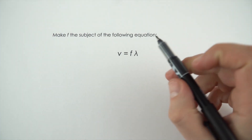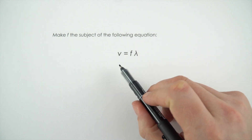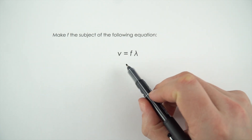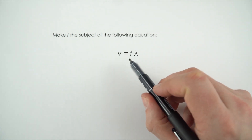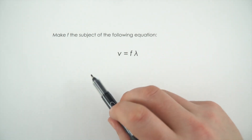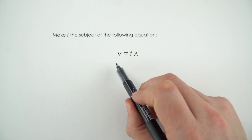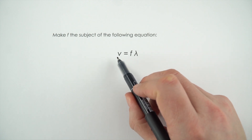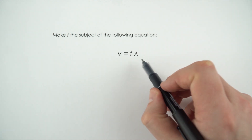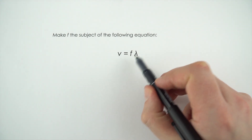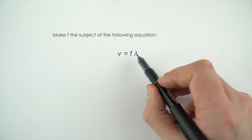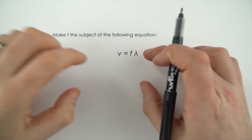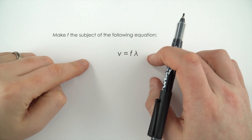In this example we need to make F the subject of the following equation. This is the wave speed equation, where we use V for wave speed, F for frequency, and this upside down Y, which is called lambda, for wavelength. But that doesn't really matter when it comes to rearranging.